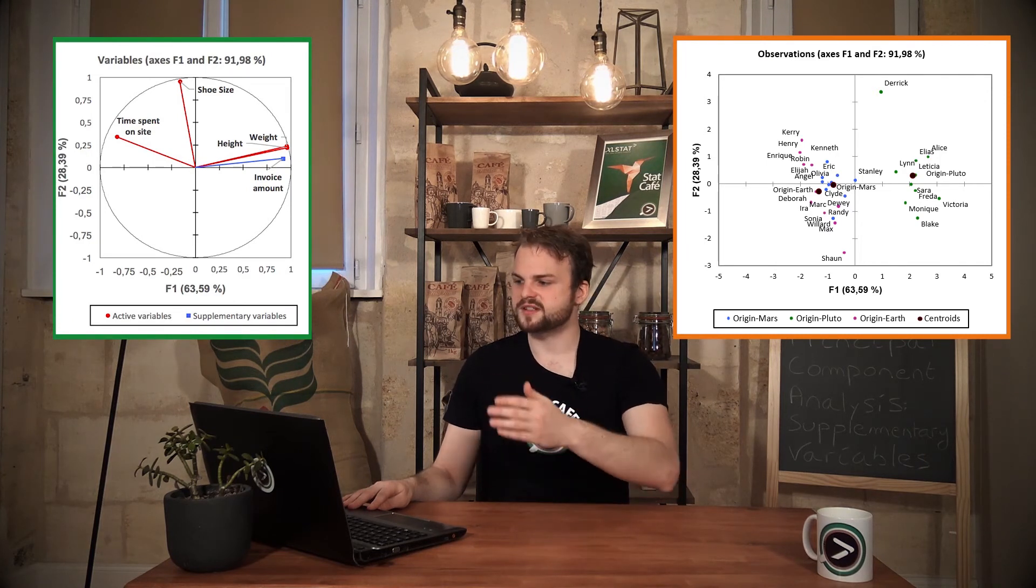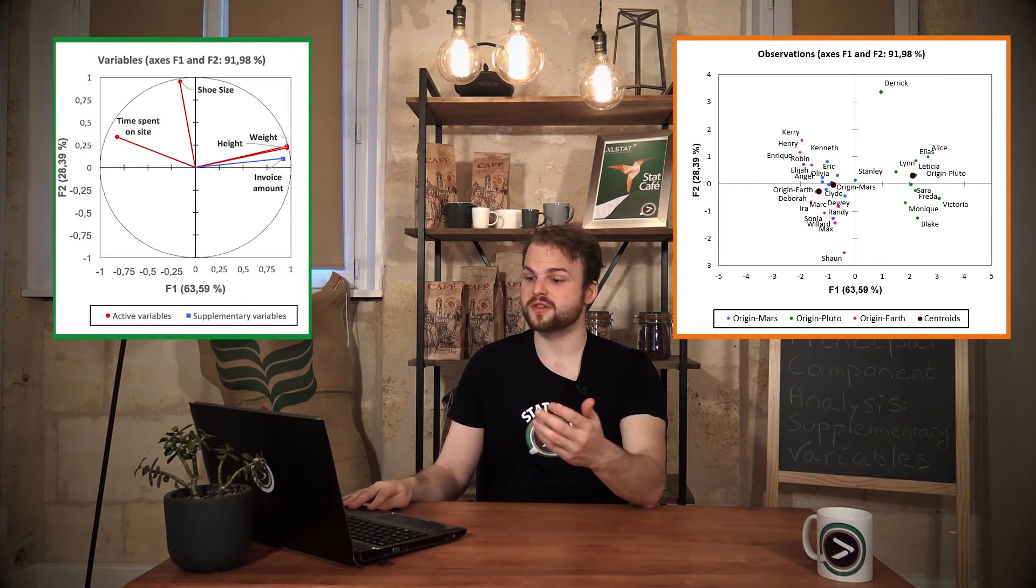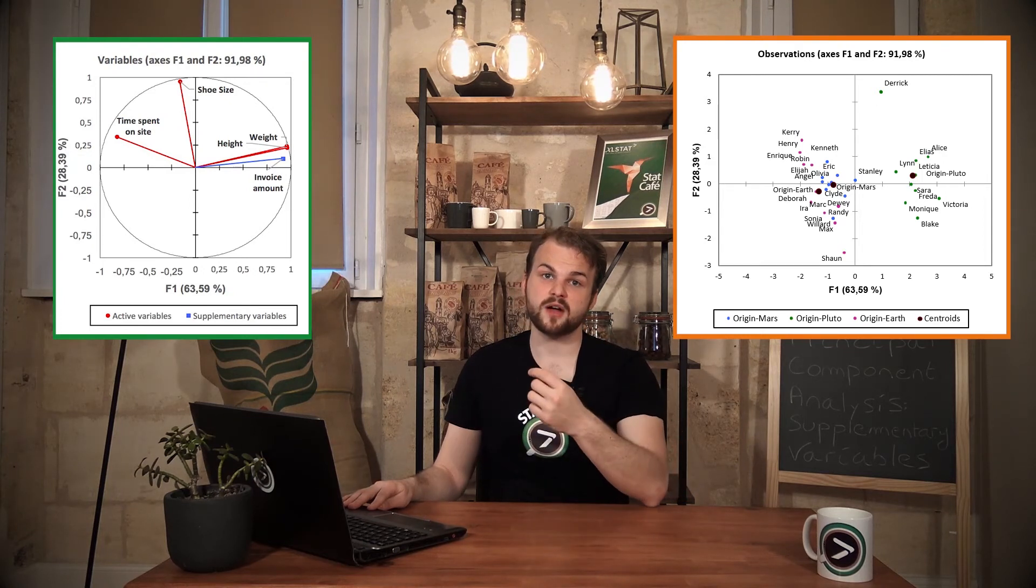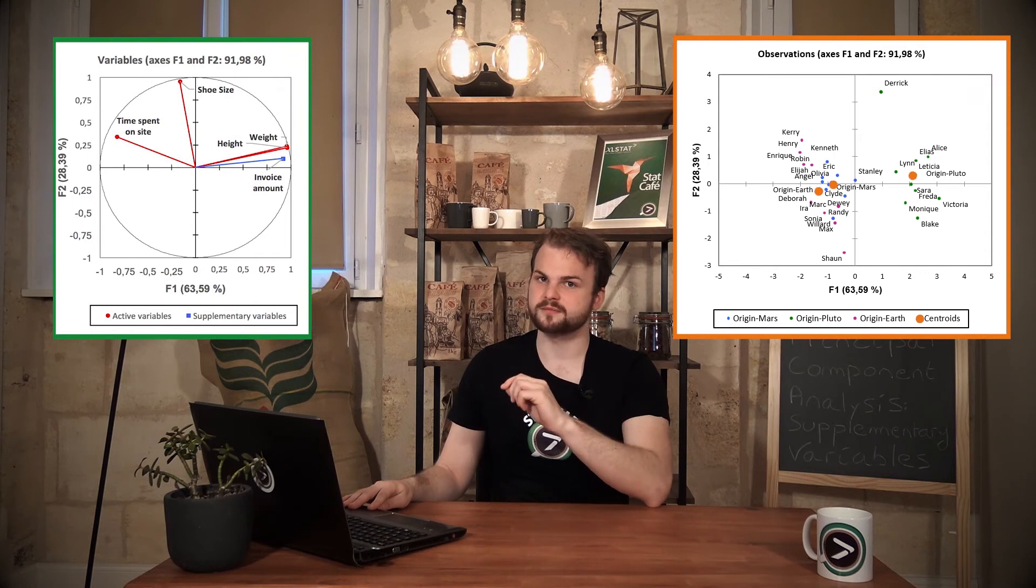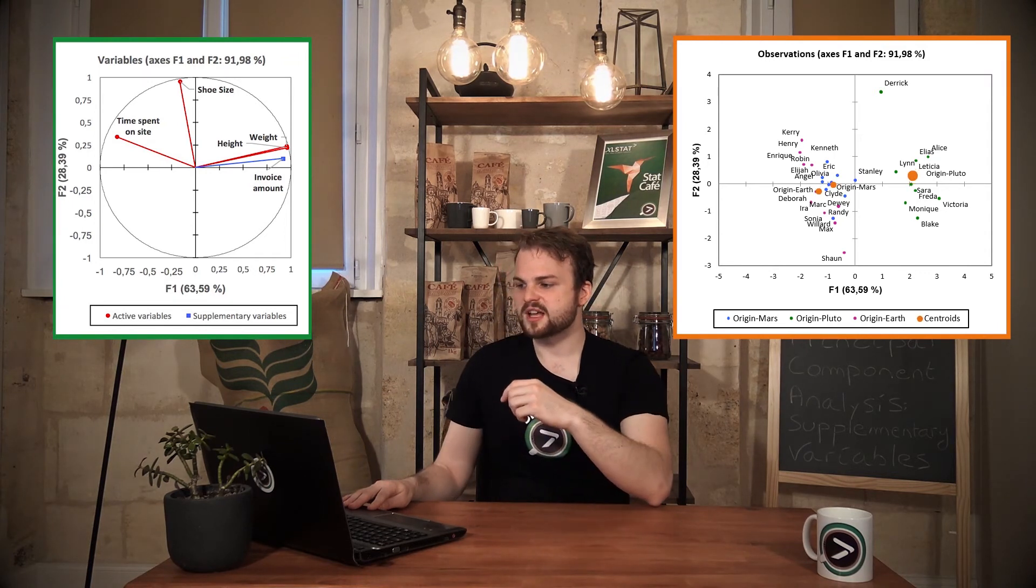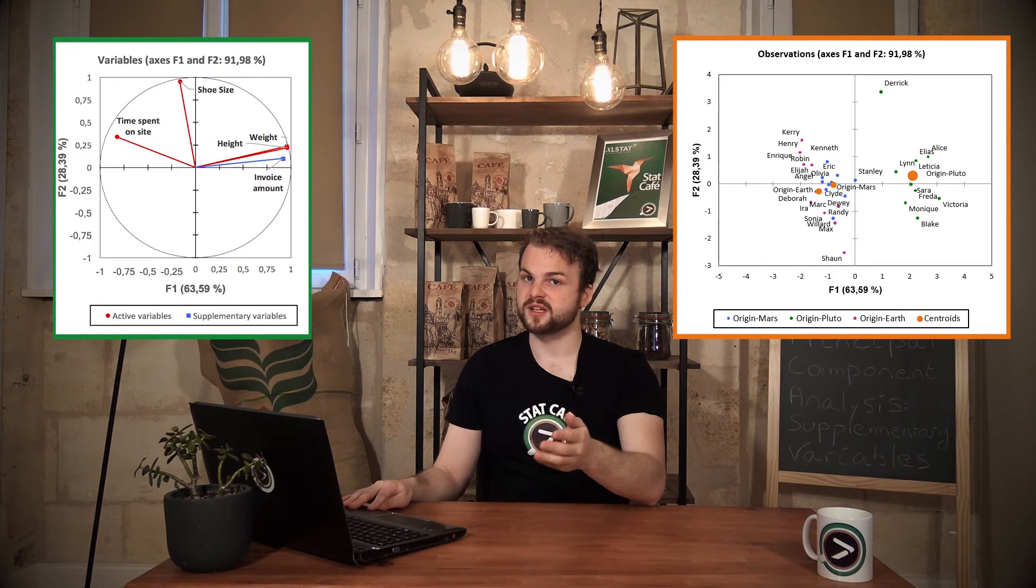Martians in blue, Plutonians in green, and customers from Earth in purple. Each group is characterized by its center of gravity, also called centroid. Here is the Plutonian centroid, for instance. Centroids help evaluating distances between categories.